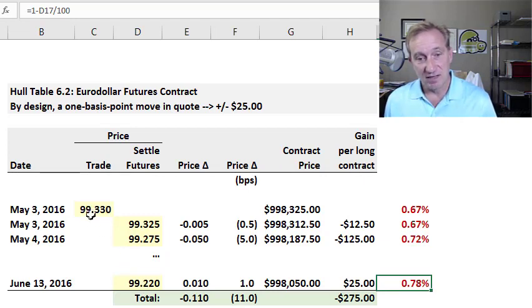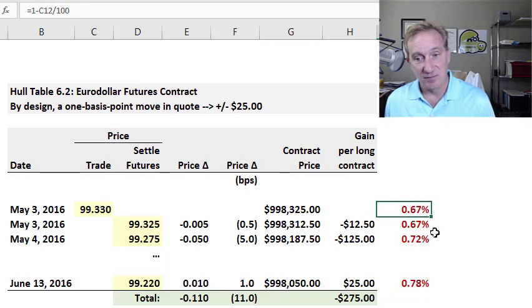What we have here cumulatively is a drop in the futures quote from 99.33 to 99.22. If I back that out from 100, or 1, you can see it reflects or represents an increase in the LIBOR cumulatively from 67 basis points to 78 basis points.